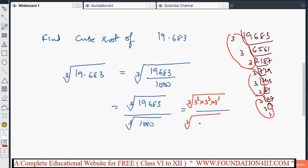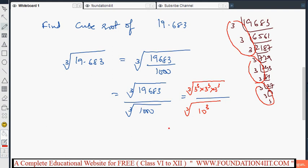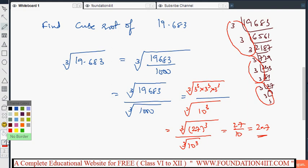By denominator, cube root of 1000. 1000 is 10³ because 10 into 10 into 10. Cube root of 3 into 3 into 3 overall cube. 3, 3 is 9, 9, 3 is 27 whole to the power 3, by cube root of 10³. Now this cube and cube root cancel. 27 by 10. 27 by 10 is 2.7. So 2.7 is the cube root of 19.683.